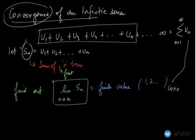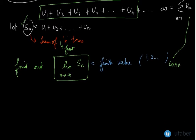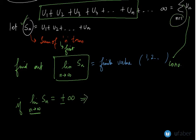Now if this limit, that is the limit for the sum of first n terms, if it is either plus or minus infinity as the value of n tends to infinity, then the given series will be a divergent series.